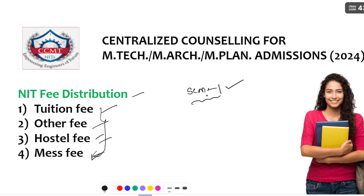You might think you can pay with the stipend — but no, you can't, because the stipend you will get after four or maybe six months in some NITs. After six months the stipend will get credited into your account. So until then you have to survive with your own money. Please keep this in mind and exercise the options in the CCMT counseling carefully. Please go through each and every NIT fee structure and keep your options carefully. If you have enough money there is no problem, but some people have to check whether the fee they are going to commit to is affordable for them.